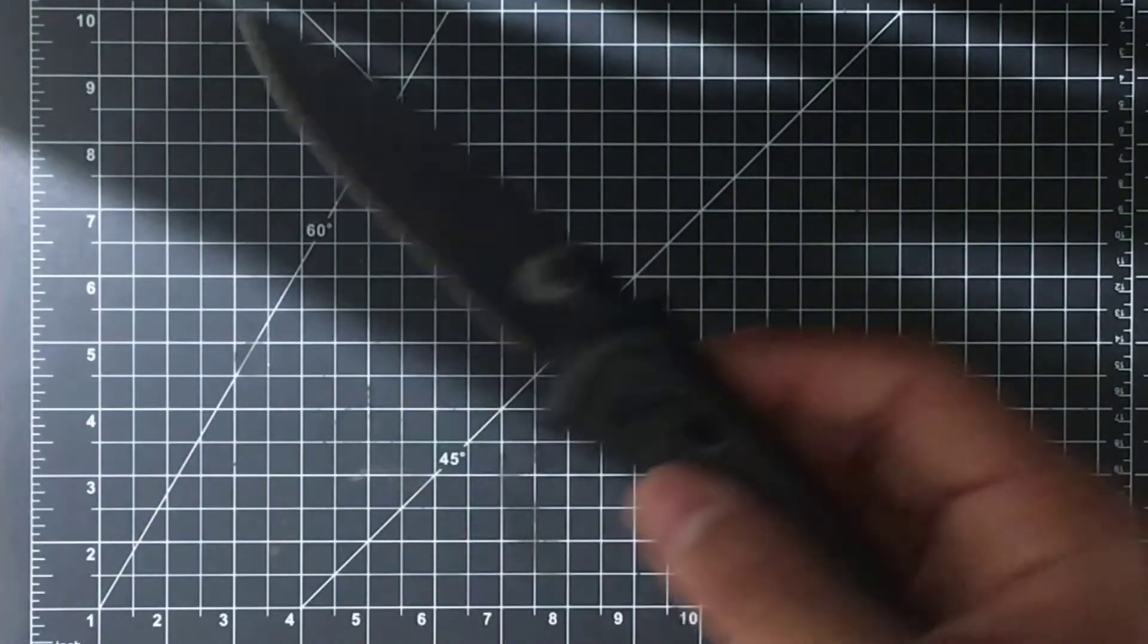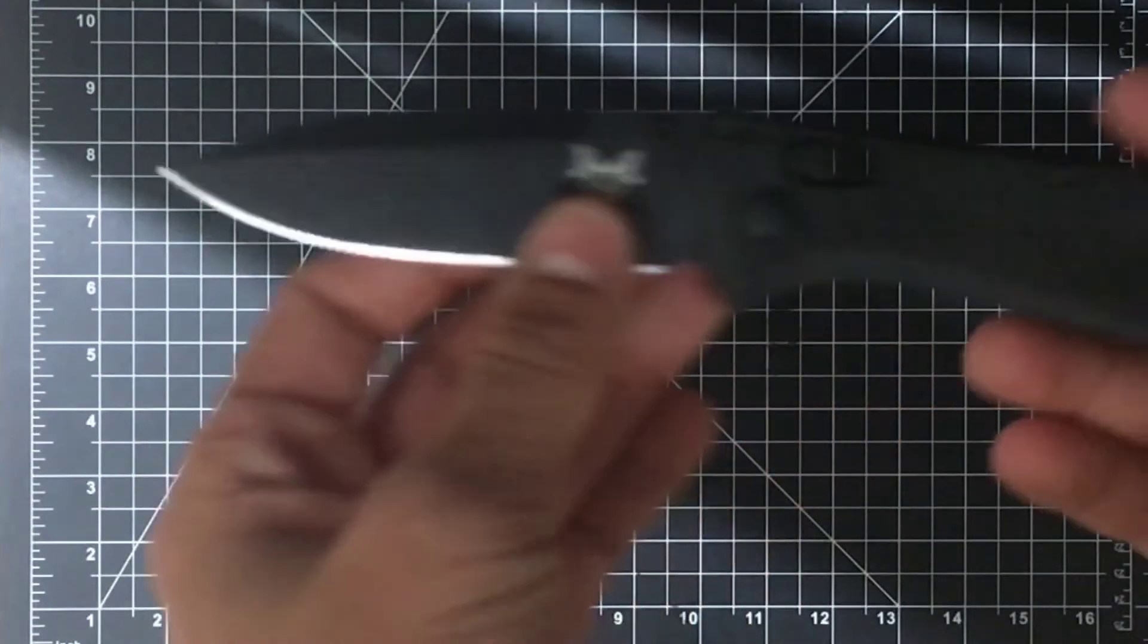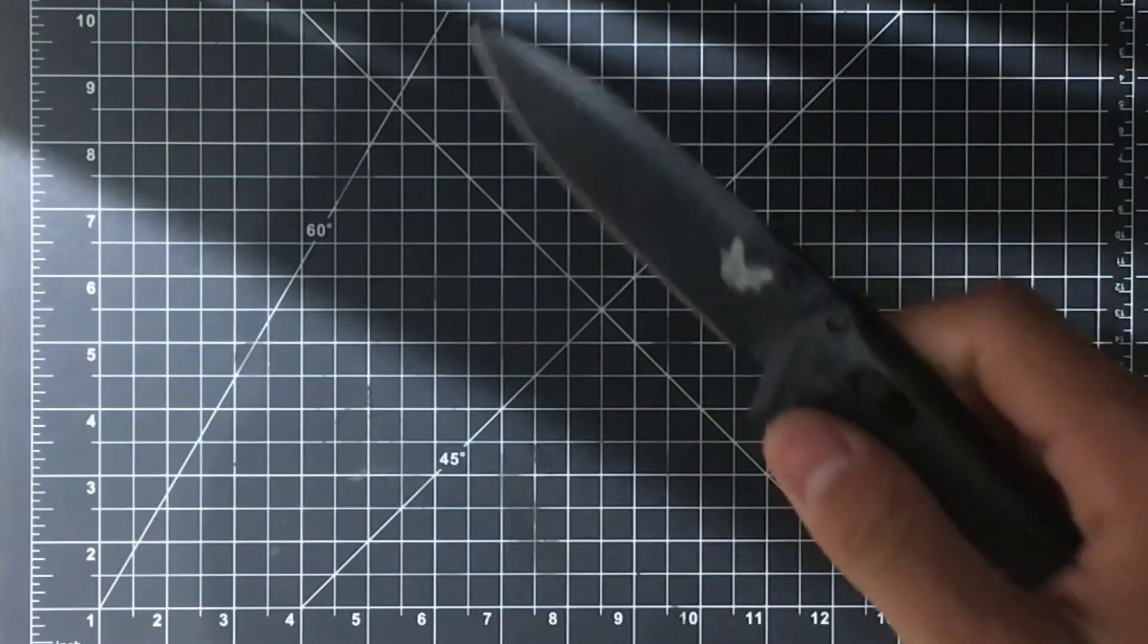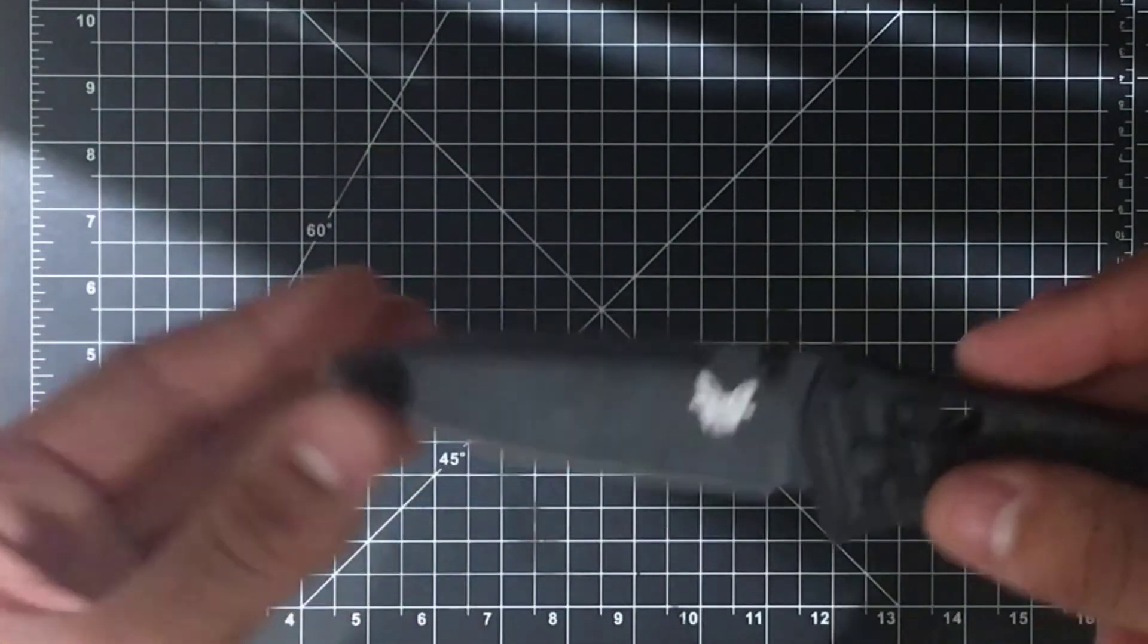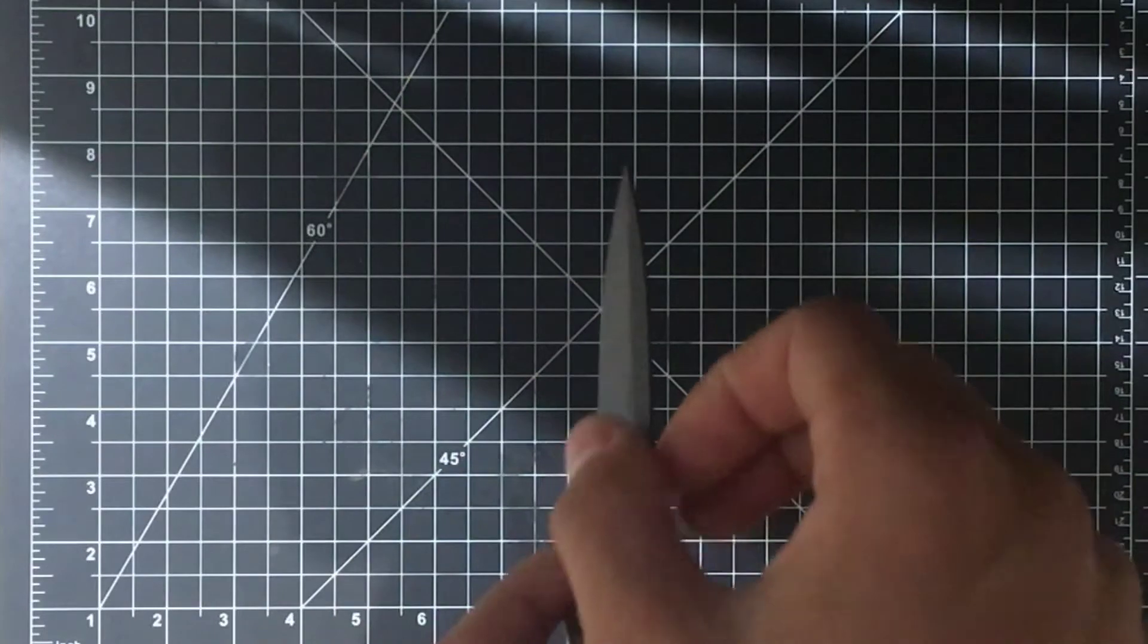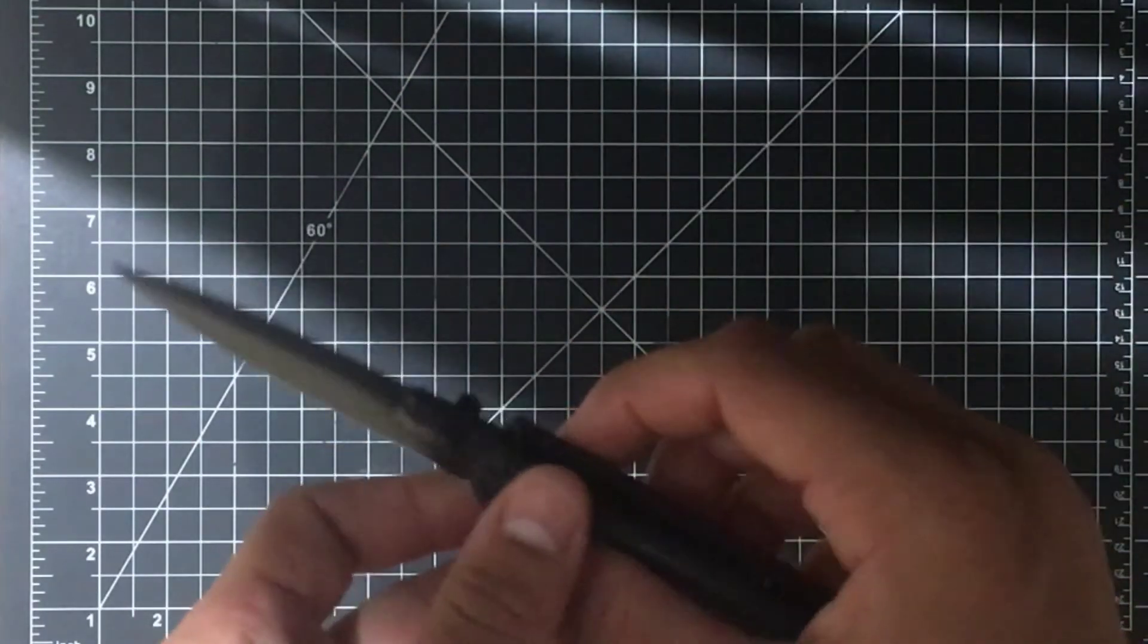And the blade style on this is like a really nice drop point. The top of this is kind of like the Warncliffe—no, I meant the Sheepsfoot version of the Benchmade Proper. It goes to a point at the top. It gets to a point. You can kind of see that grind on the top. Yeah, it's kind of cool.